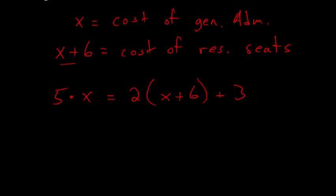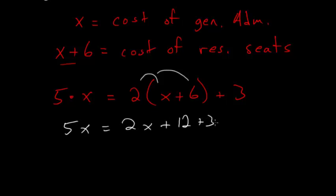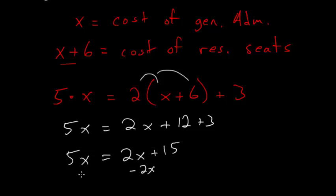Here we just need to solve for x. So five x equals — distributing the two — two x plus twelve plus three. So we have five x equals two x plus fifteen. Subtracting two x from each side, we're left with three x equals fifteen.